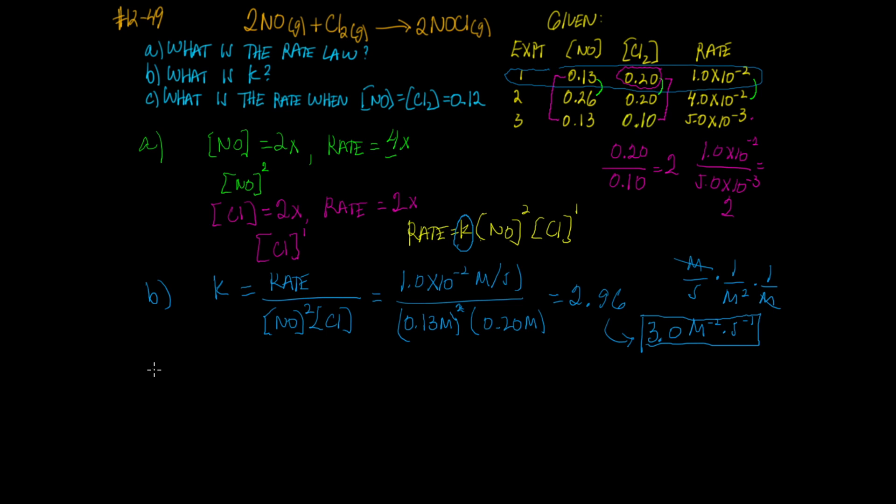For part C, it's asking us what is the rate when the concentrations equal the given values. So we go back to our rate equation: rate equals K times NO squared times chlorine to the first power. We plug in everything we know. K is 3.0, NO is 0.12 squared, and chlorine is 0.12 molar.